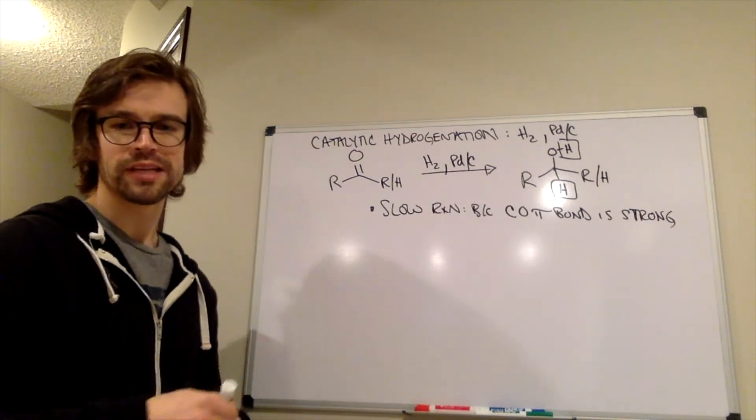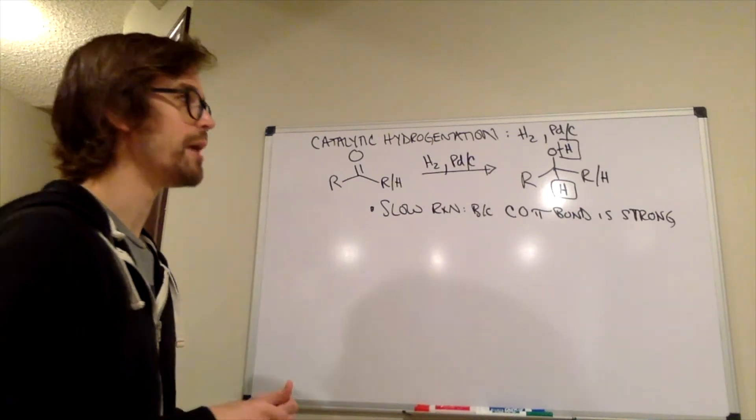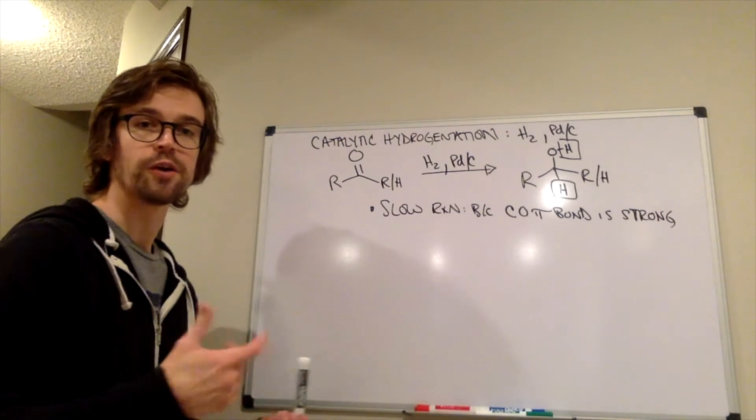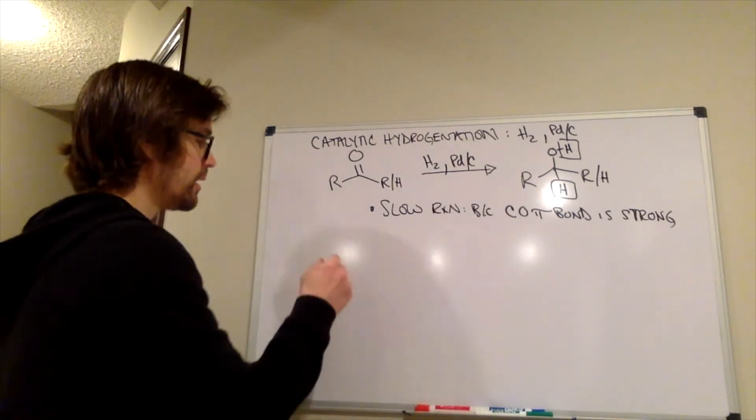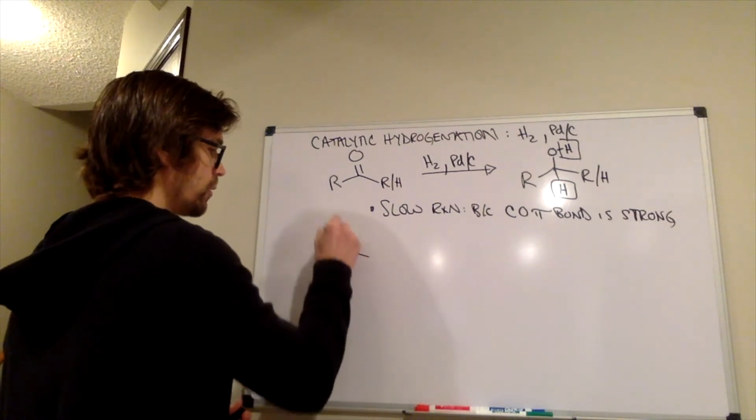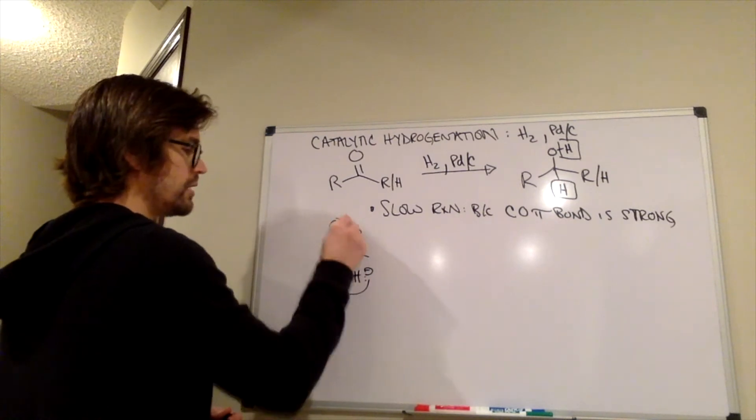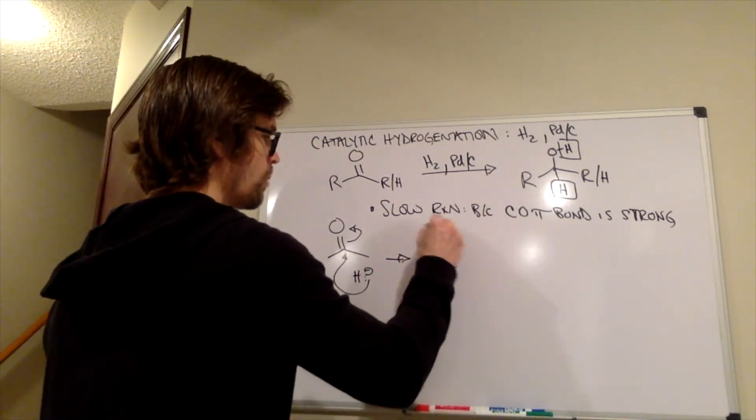So that brings up a question. Well, why is it that these other methods reduce these ketones and aldehydes so well? And what we have to think about is the mechanism of that. And so essentially, what is the intermediate when we have H minus and a ketone? The intermediate is this O minus.